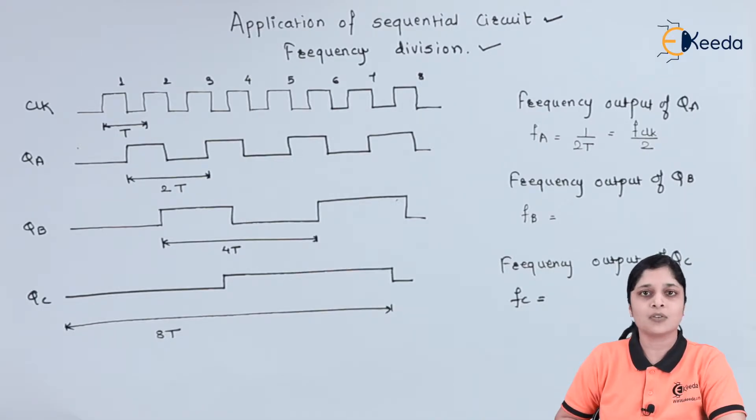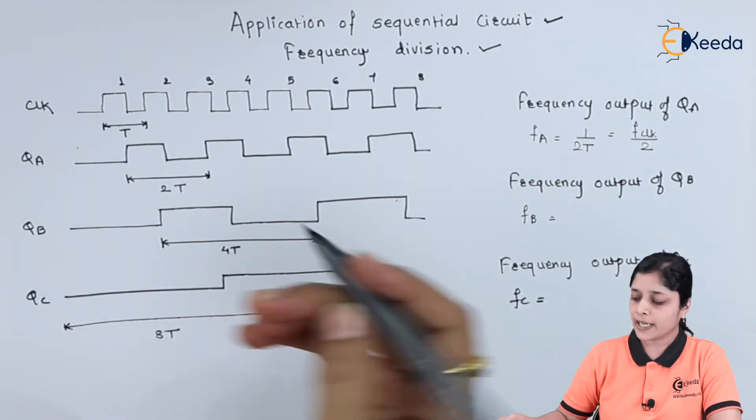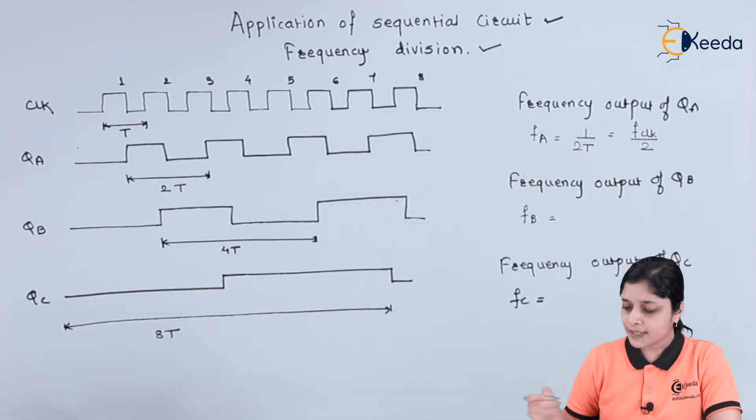We have used here the timing diagram for three bit up counter, specifically a three bit asynchronous up counter. We will explain this timing diagram to achieve the frequency division.